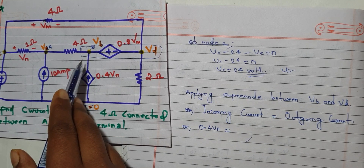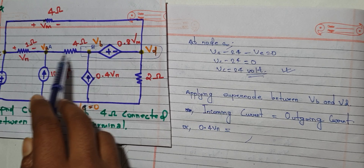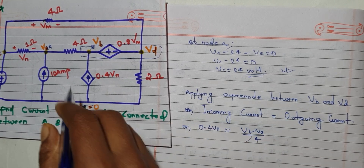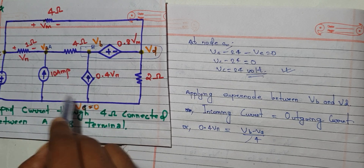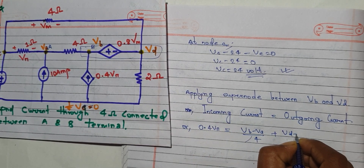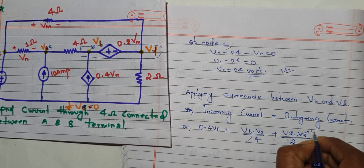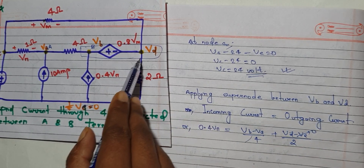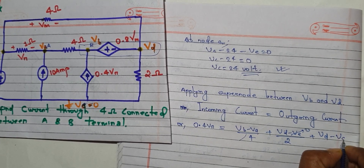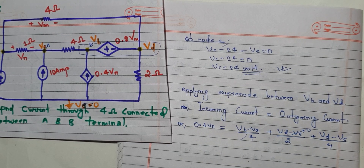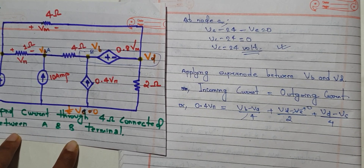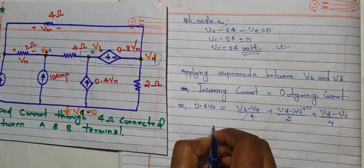For the outgoing current at BB, we have BB minus BA divided by 4. Then for BD, the outgoing term is BD minus BA divided by 2, plus BD minus BC divided by 4. Setting incoming equal to outgoing gives us the first KCL equation.